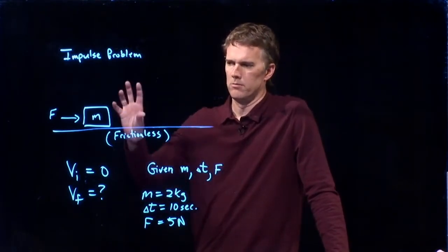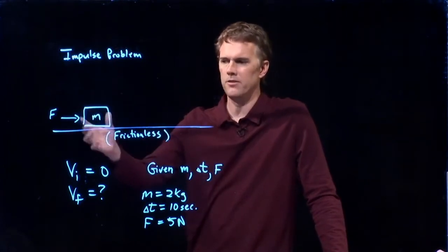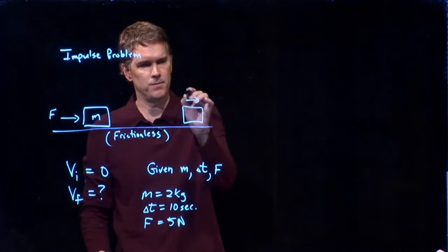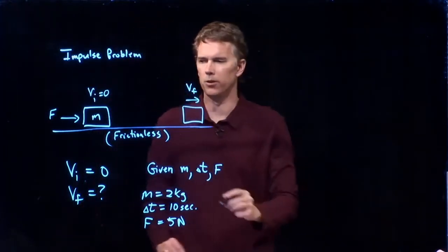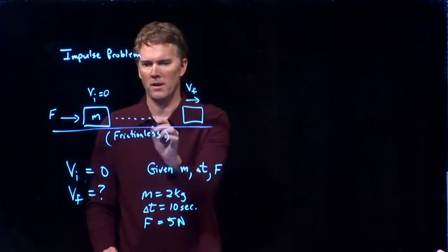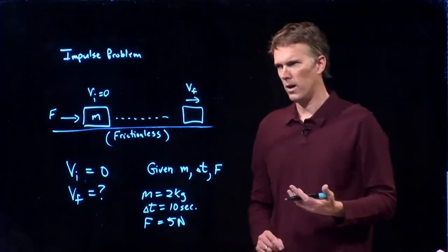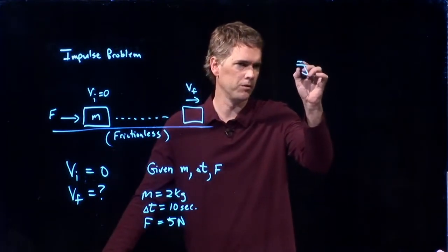So it should be obvious to you that if I'm going to push on this thing to the right, it's going to end up moving to the right. So at some later time, it's got some vf to the right. It started at rest, vi is equal to zero. And now how do we calculate this? Well, this is an impulse problem. So we go back to our definition of impulse.